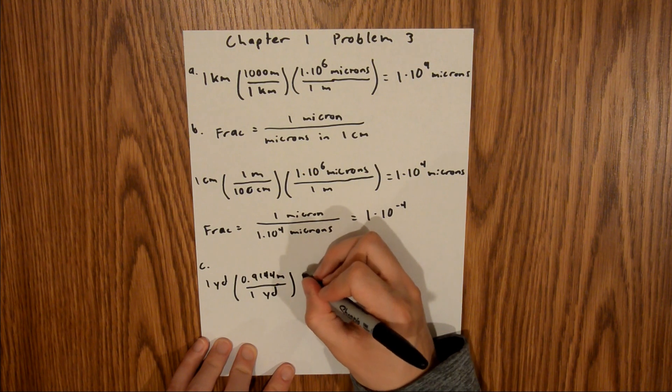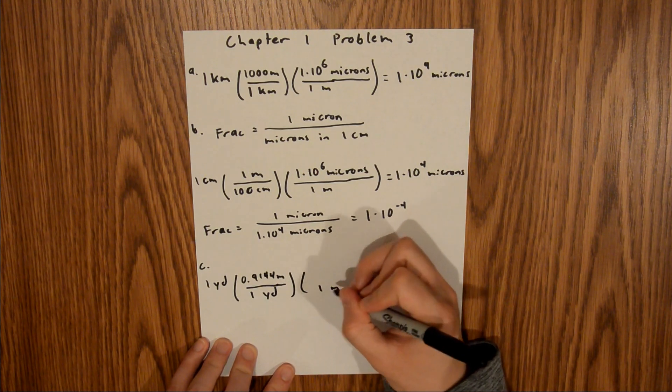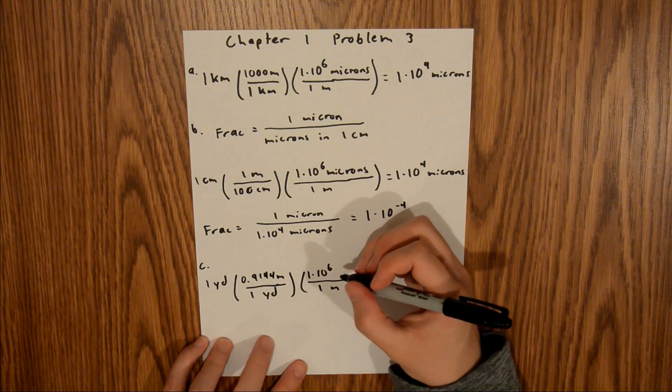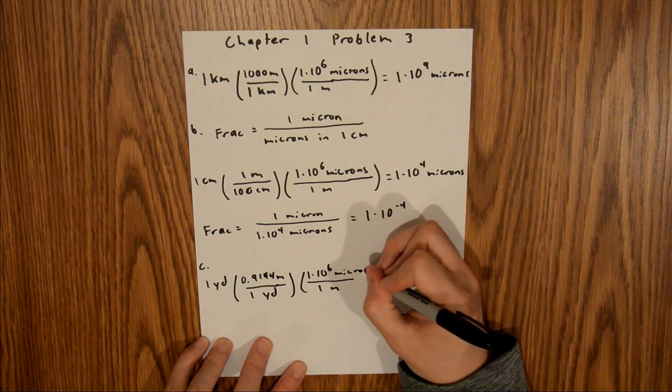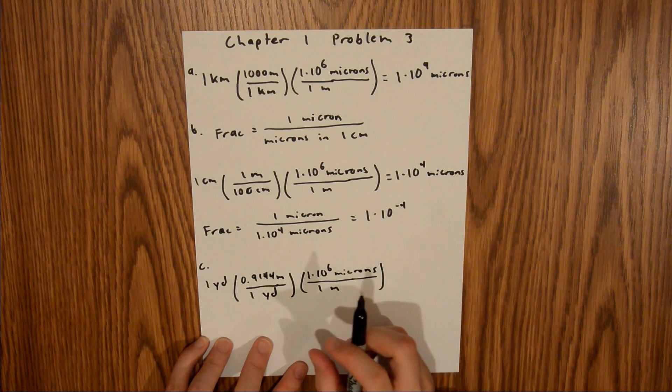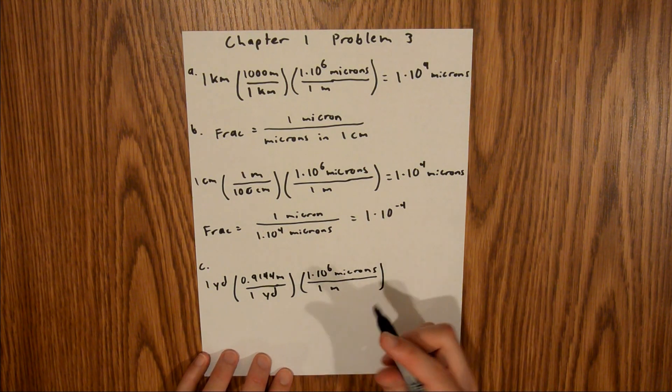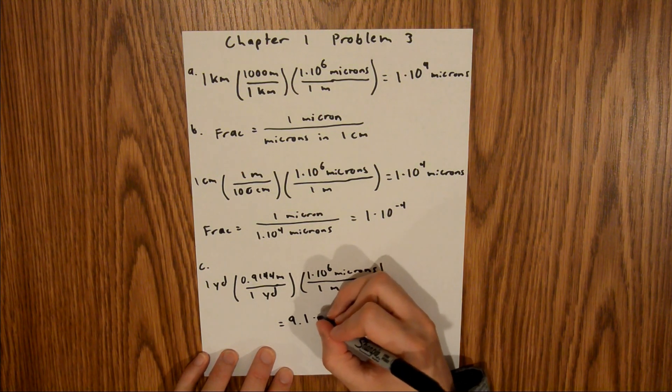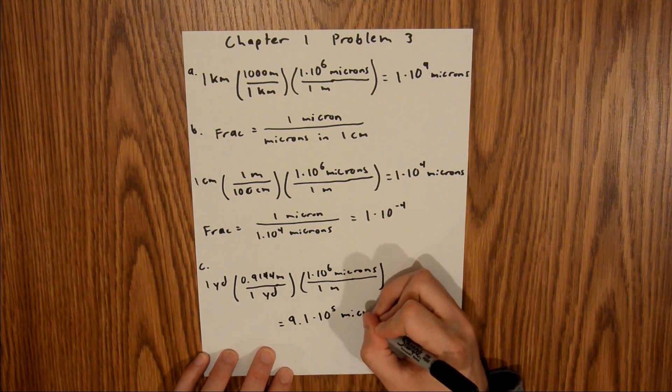And then 1 meter is, again, 1 times 10 to the sixth microns. And if you plug that into your calculator, you will find that 1 yard is equal to 9.1 times 10 to the fifth microns.